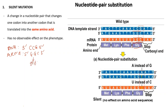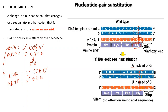If nucleotide pair substitution occurs and changes the third base from guanine to adenine, the mutated DNA template reads 3' CCA 5'. During transcription, this produces an mRNA codon that reads 5' GGU 3'. During translation, it still produces the same amino acid — glycine.